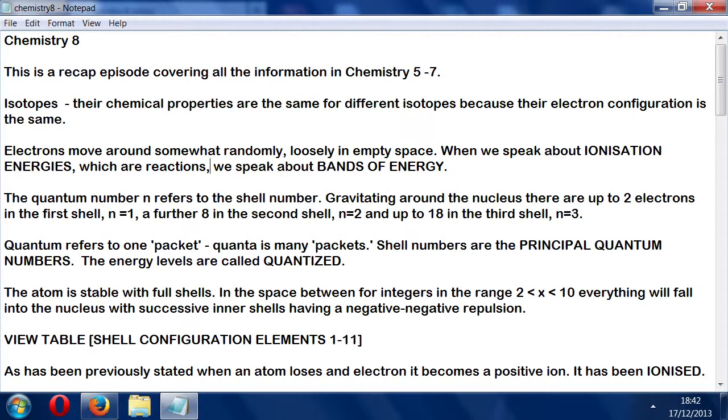The quantum number refers to the shell number. Gravitating around the nucleus there are up to 2 electrons in the first shell n=1, a further 8 in the second shell n=2, and up to 18 in the third shell n=3. Quantum refers to one packet, quanta to many packets. Shell numbers are the principal quantum numbers. Energy levels are called quantized.